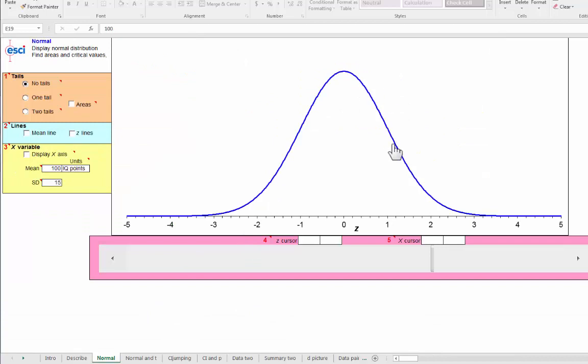Here's the normal distribution at the normal page in ESCII. I can turn on the mean. The axis here is Z, so this is actually a standardized normal distribution. And here are the units, 1, 2, 3, minus 1 and so on, in units of standard deviation.